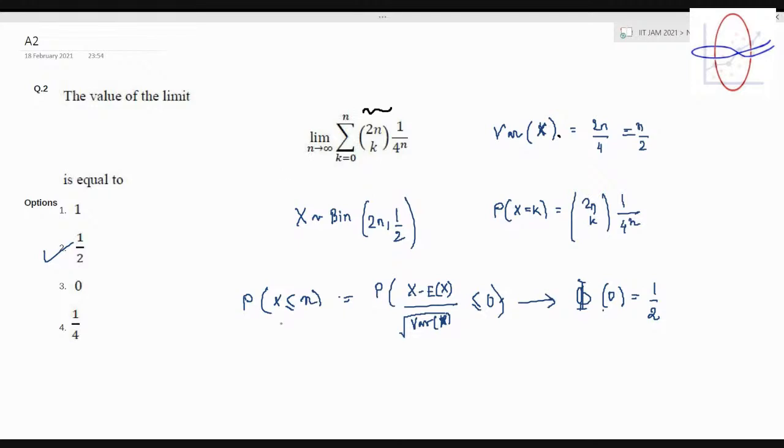So essentially this value is actually probability X less than equal to n, where X follows binomial 2n comma half. So if you just use the central limit theorem, X minus expectation of X by variance of X, it is less than equal to 0 is coming out.